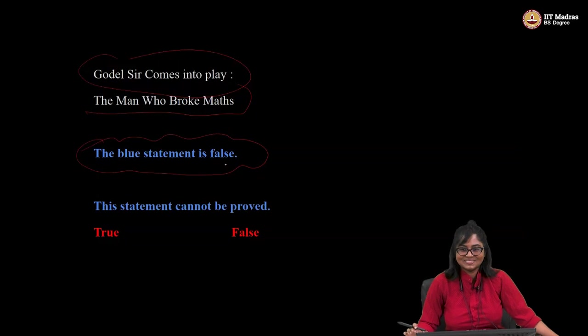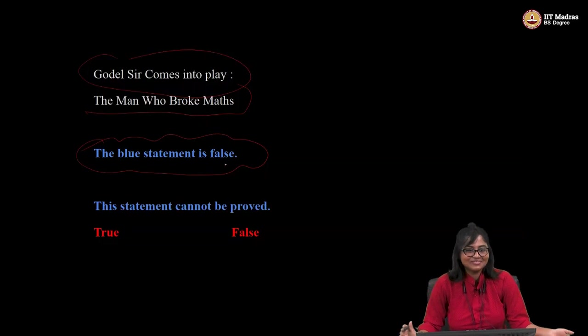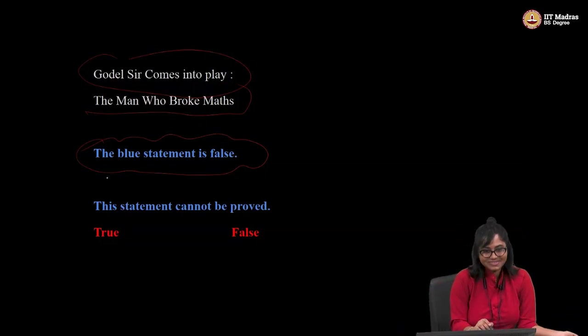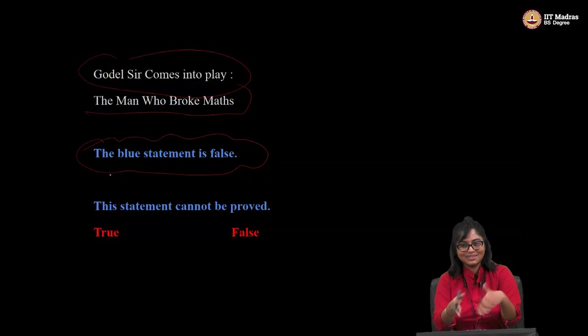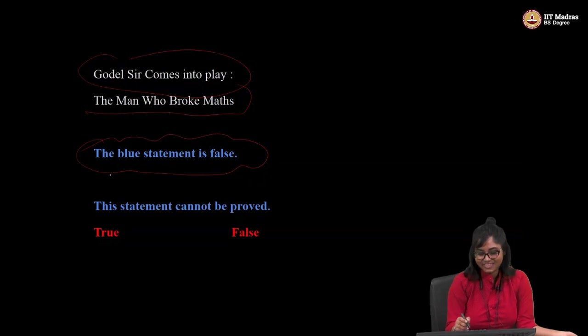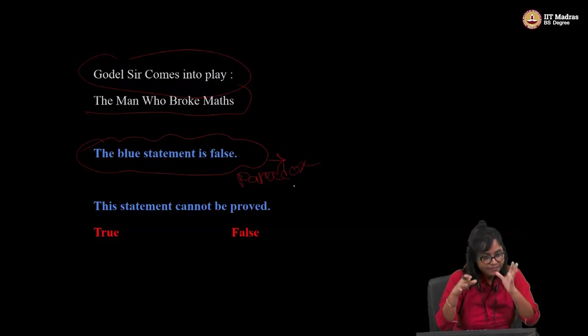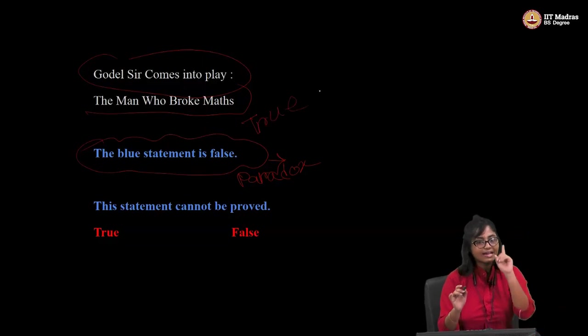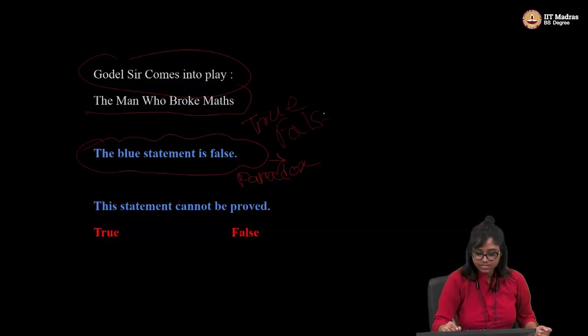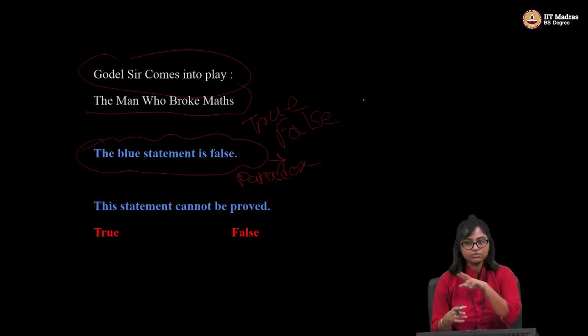So can you tell me if the statement is true or false? So if the statement is true, if the statement is false, then it is true because the statement says the statement is false. So if it is false, it is true. And if it is true, then it is false. So here comes a paradox. In basic, in the foundation of mathematics. Before Godel, before Kurt Godel, mathematicians had this notion that a theory or a statement can either be true or be false. There is no gray matter. There is no middle ground, either true or false.